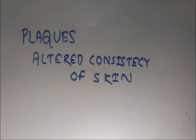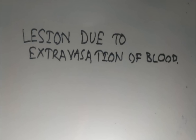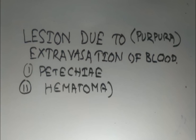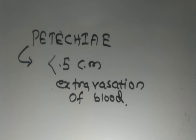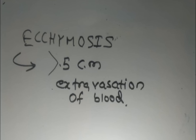The third category is indurated lesions, in which all are called plaques. In the fourth category, lesions due to extravasation of blood — small lesions are called petechiae and large lesions are called ecchymosis.